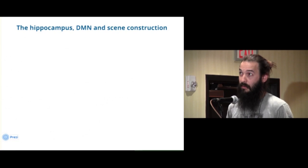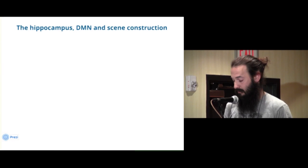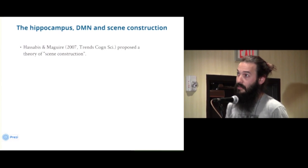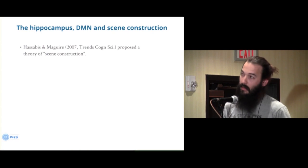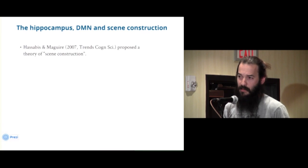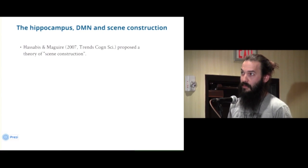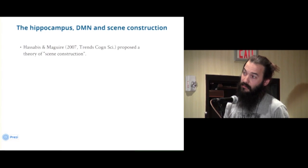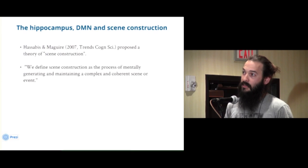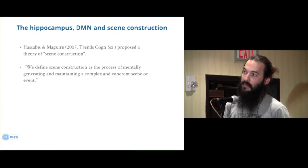I want to talk a little about the hippocampus, the default mode network, and this idea of scene construction. In 2007, Hassabis and Maguire published a paper on scene construction. Hassabis is a really interesting figure — a chess prodigy at 13 who went into designing computer games before returning to study cognitive neuroscience. They've come up with this idea of scene construction, which, while initially met with some skepticism, has been increasingly reproduced and supported by results. They define scene construction as the process of mentally generating and maintaining a complex and coherent scene or event.